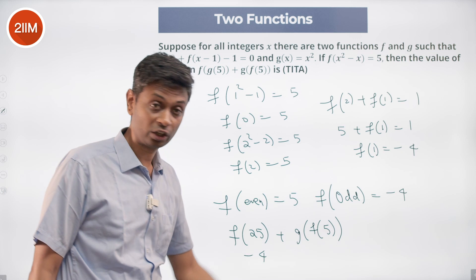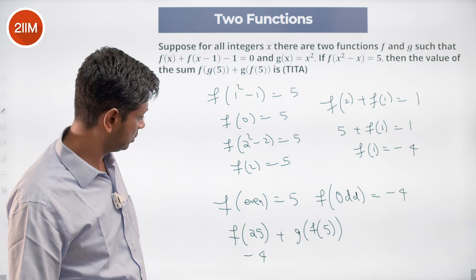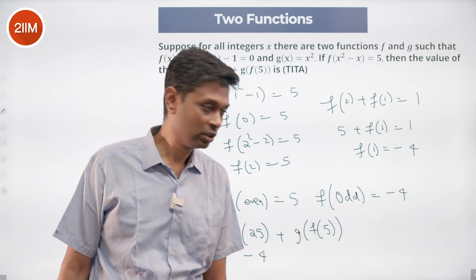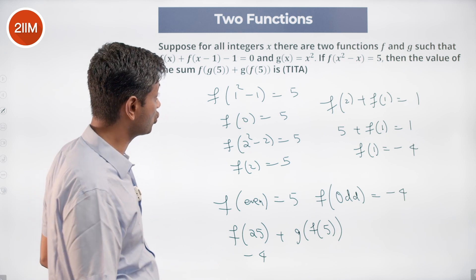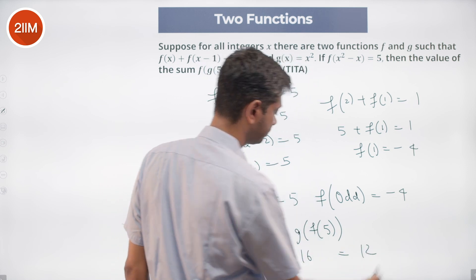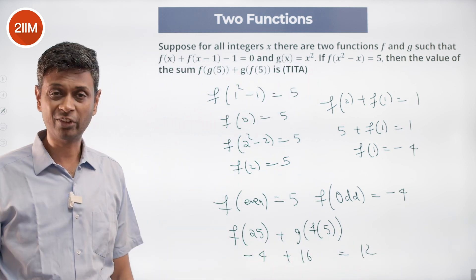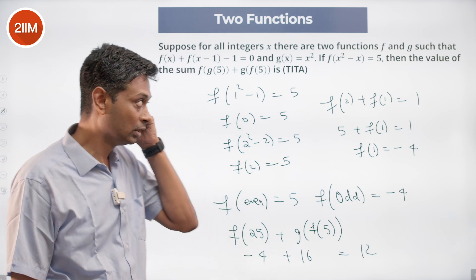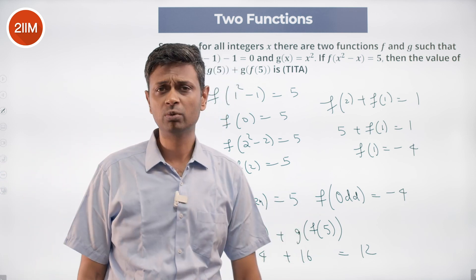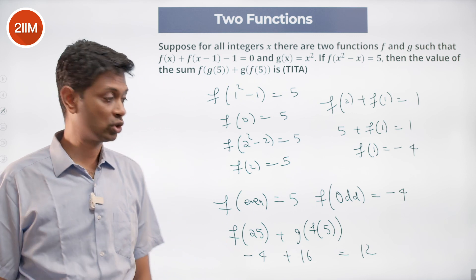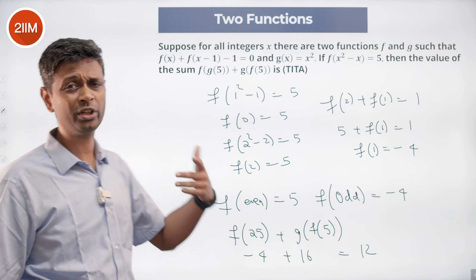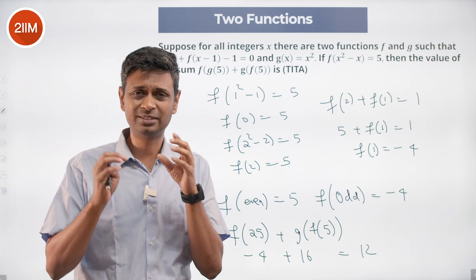f(5) is also -4 since 5 is odd. So g(f(5)) = g(-4) = (-4)² = 16. Therefore f(g(5)) + g(f(5)) = -4 + 16 = 12. A delightful question — not heavy-duty function theory, but tons of common sense.